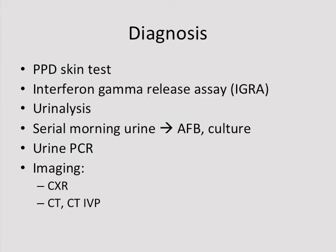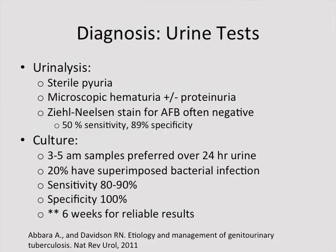We have several modalities for diagnosing TB. Urinalysis most commonly shows sterile pyuria — white blood cells and no bacteria. There can be microscopic hematuria. Urine is always sent for microscopy for acid-fast bacilli, though sensitivity is very low. Urine culture is also sent, but requires 3 to 5 AM samples because prolonged exposure of the mycobacterium to urine acid slows growth. 20% will actually have a superimposed bacterial infection. Although the culture is very specific for TB, sensitivity is not great.